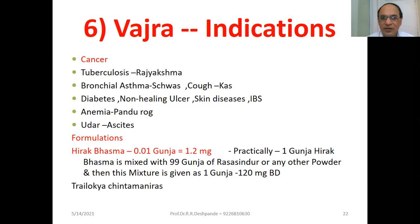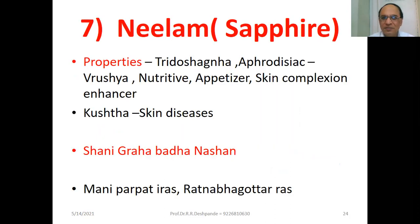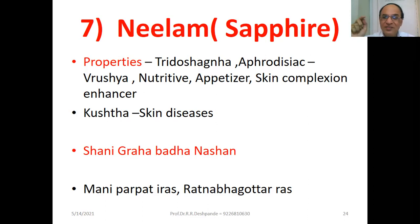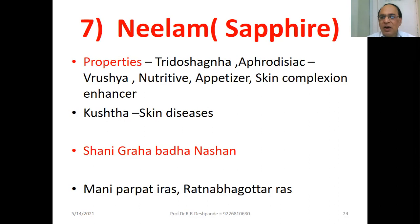Neelam (Sapphire). Properties: it is Tridoshagna. Aphrodisiac (Vrishya), nutritive, appetizer, and skin complexion enhancer. Used in Kushtha — all skin diseases. Astrologically, Shani-Graha-Badha-Nashana. Each Ratna is associated with a particular Graha. If Shani is problematic in the astrological chart, use Neelam. Products: Mani-Parpati-Rasa and Ratna-Bhagotra-Rasa.